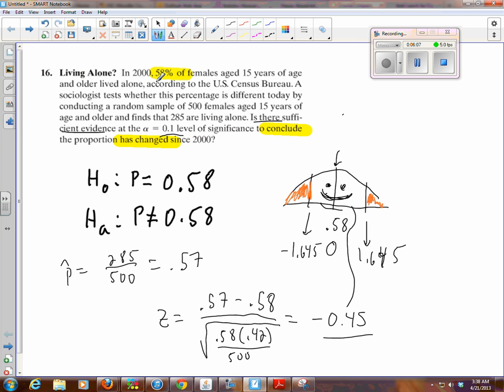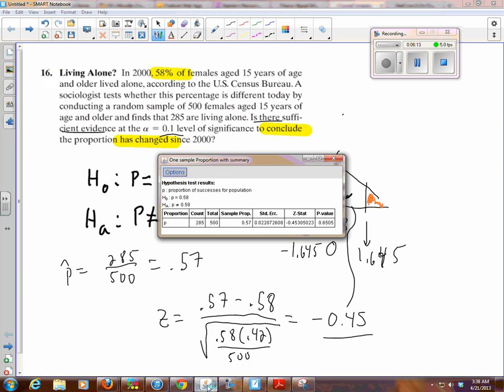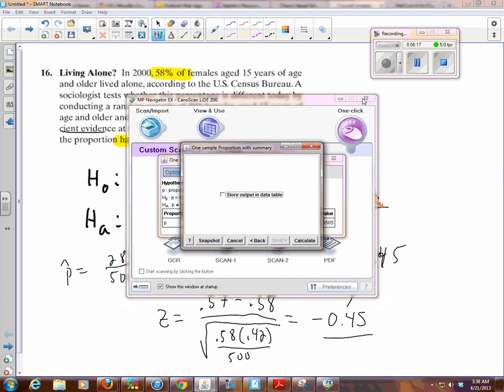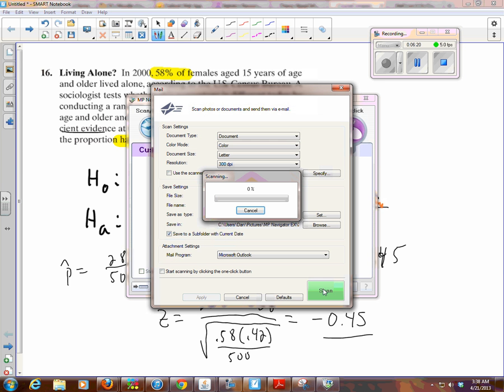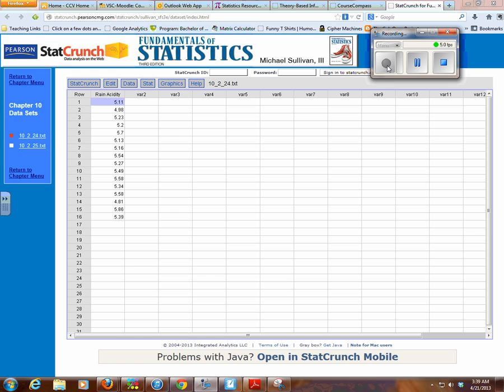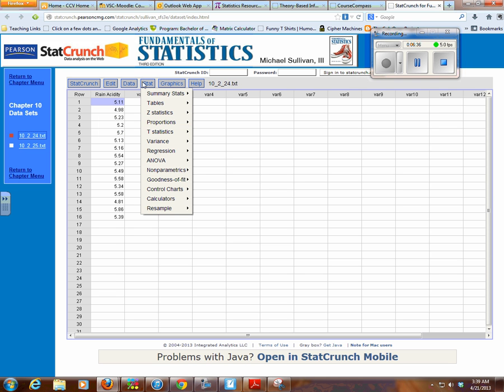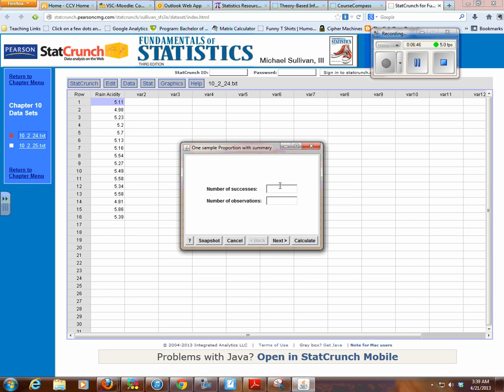We can also do this with p-values, and software does this very nicely for us. What I did earlier is I just opened up a StatCrunch window to use StatCrunch to do this since you have it and it's free for you. What we're going to do is we're going to do a proportion. I clicked on stats, proportions, one sample, and we don't want to use this data that's in this window. We want to enter our own from the problem. So there's 285 successes out of 500 observations. This is asking you for the p-hat.